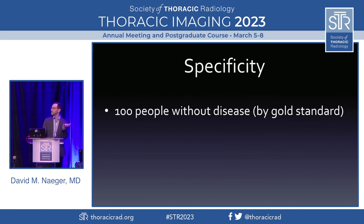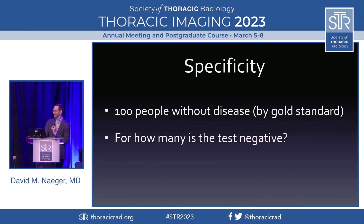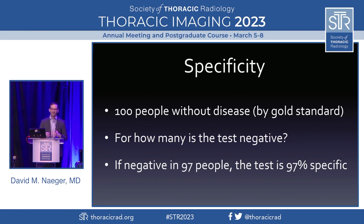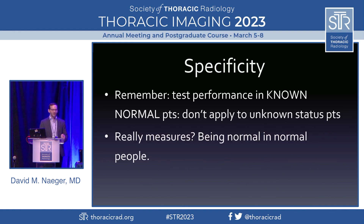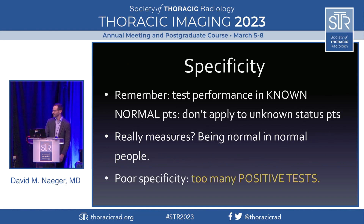Specificity is its mirror. We take 100 people proven not to have the disease already, then ask how often is the test negative. If it's negative in most people, then it's 97% specific. Again, this is only when we already know for sure they don't have the disease. It's really just a statistic of a test being normal in normal people. If it lacks this, the problem is it's positive too much — inaccurate.